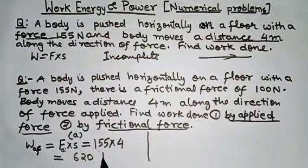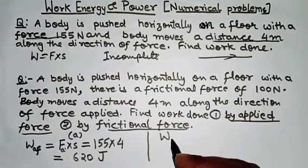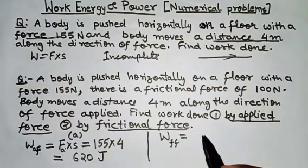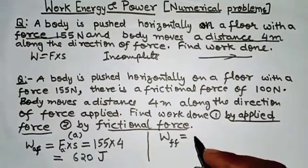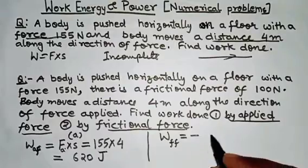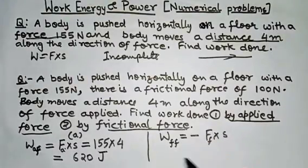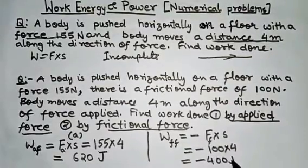Multiplying gives 620 Joule. Now, work done by frictional force: we know frictional force acts opposite to the direction of the applied force or moving object, so we put a minus sign. W = −F_friction × displacement = −100 × 4 = −400 Joule.